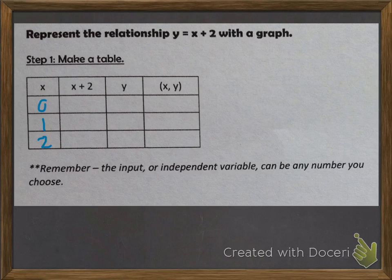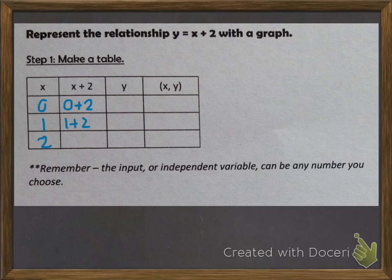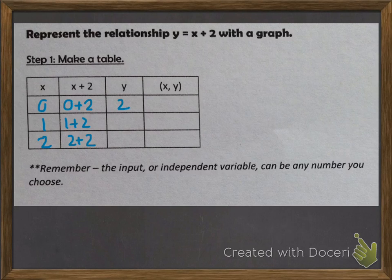In our process column, we follow our rule, x plus 2: 0 plus 2, 1 plus 2, and 2 plus 2. To find the y value, we figure out the sum — 0 plus 2 is 2, 1 plus 2 is 3, and 2 plus 2 is 4.